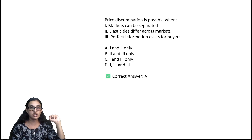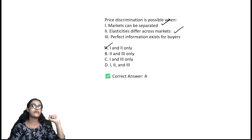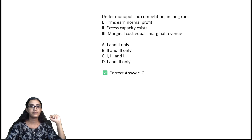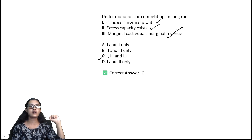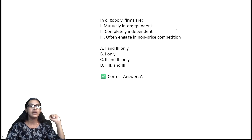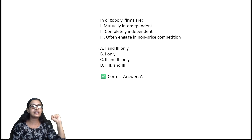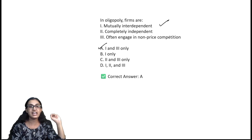Price discrimination is possible when markets can be separated and elasticity differs across markets — option A. Under monopolistic competition in the long run, firms earn normal profit with excess capacity and marginal cost equals marginal revenue — option C. In oligopoly, firms are mutually interdependent and often engage in non-price competition — option A.